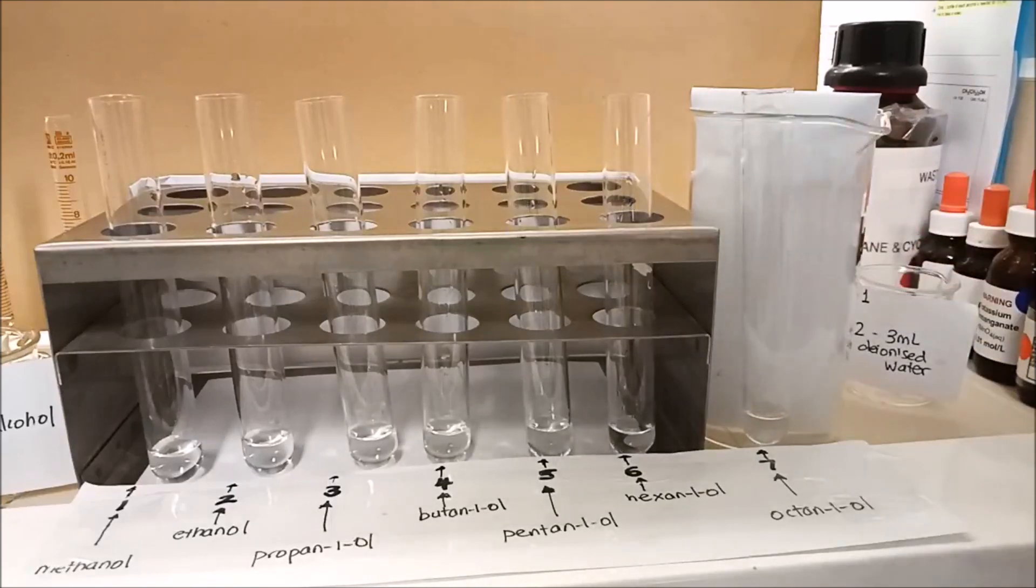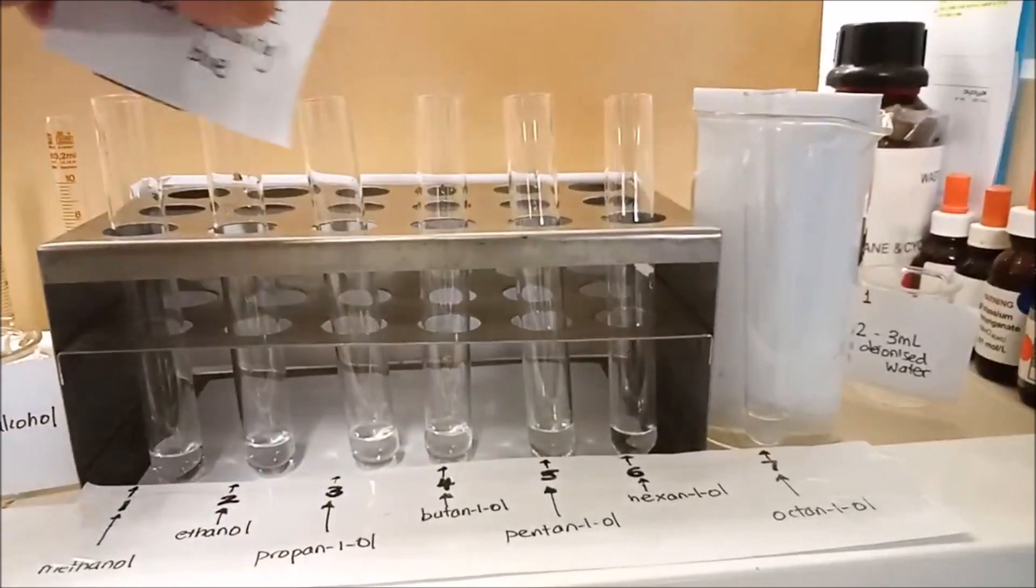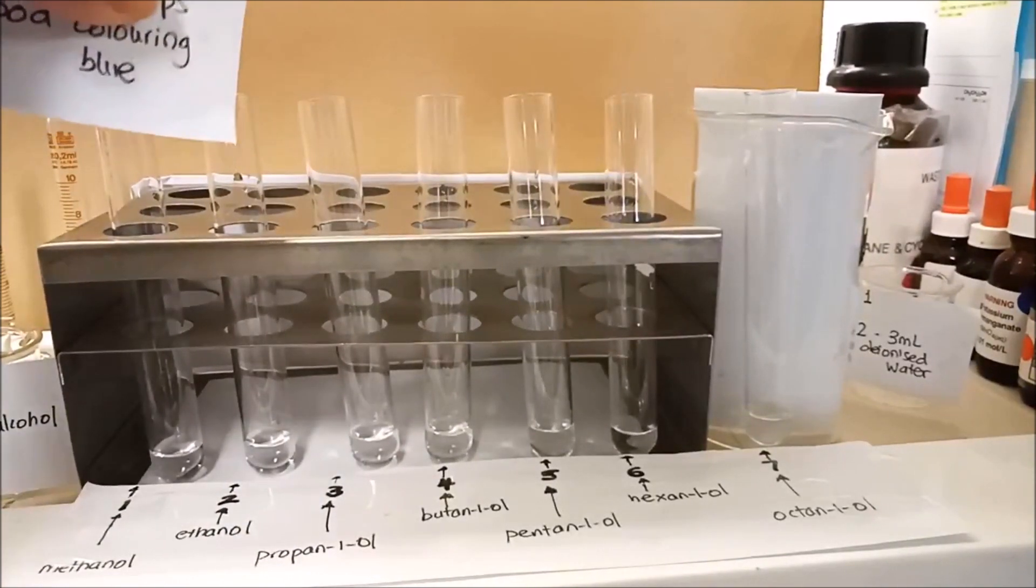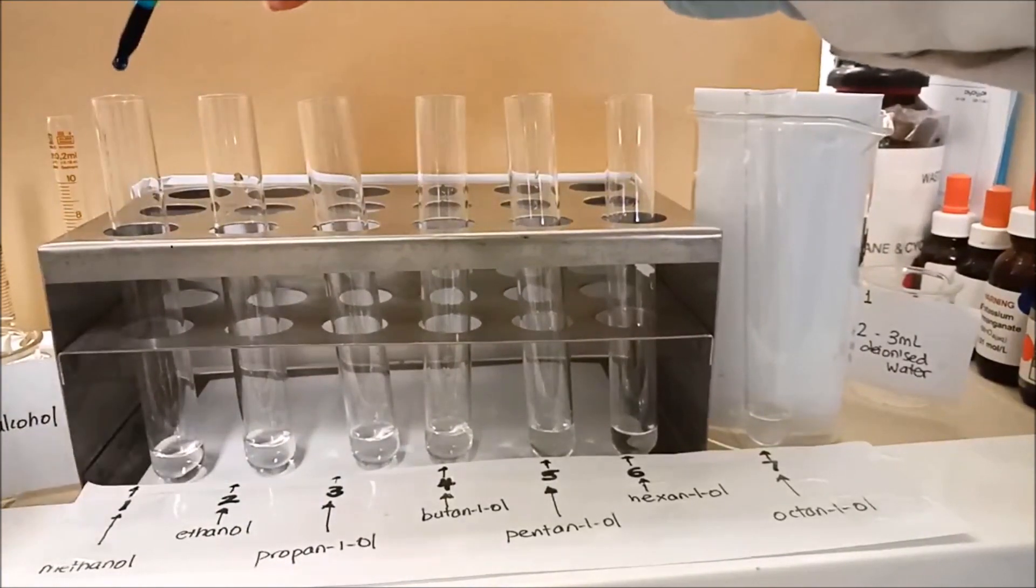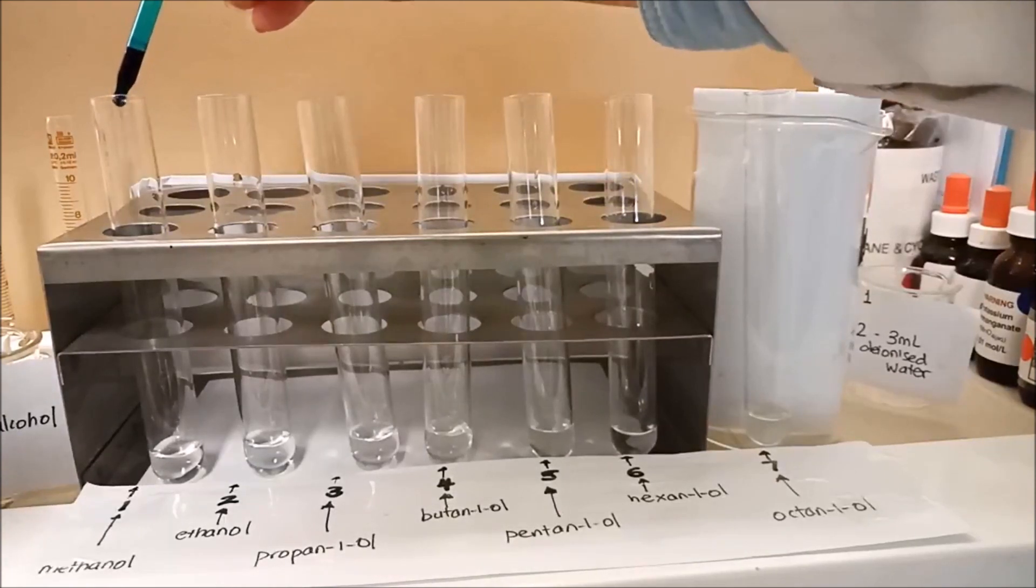Now we're going to do step two where we're going to put in food coloring. One drop of food coloring in each of the test tubes. So deionized water plus one drop of food coloring.